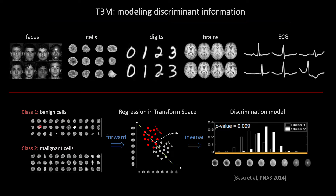We take the entire dataset, compute the transport transform for each image — represented as a point in transform domain — and then fit a classifier such as a linear classifier using Fisher discriminant analysis. Because this is a mathematical transform with both a forward and inverse formula, we can invert the classifier function to visualize and understand the differences between cells from benign versus malignant tumors.